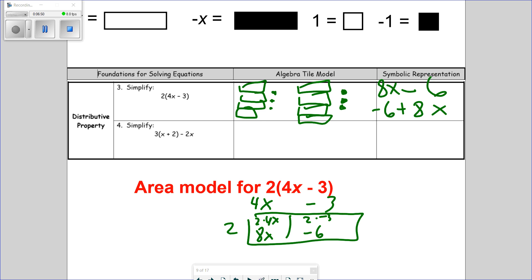And the last one. Three groups of x plus 2. Here's one group. If I need three groups of x plus 2, then minus 2x. What happens when you put an x with a negative x? They zero out. So, I'm left with x plus 6. Or 6 plus x.